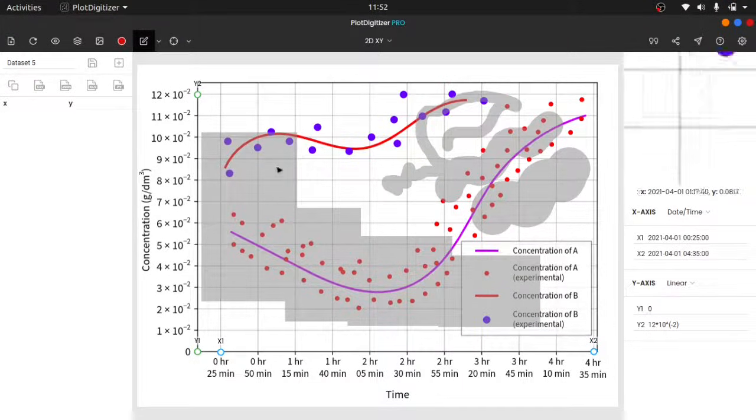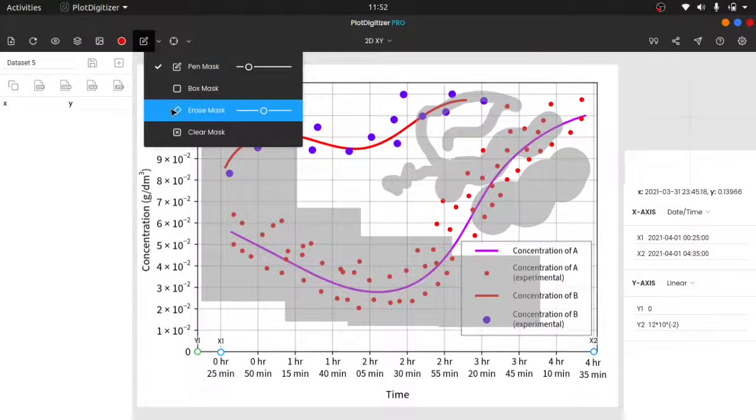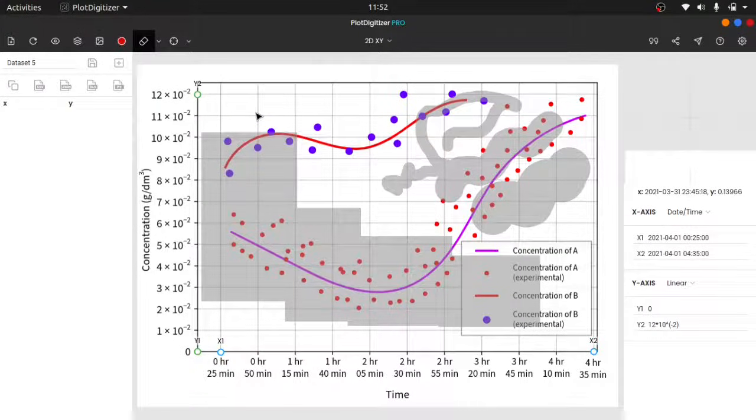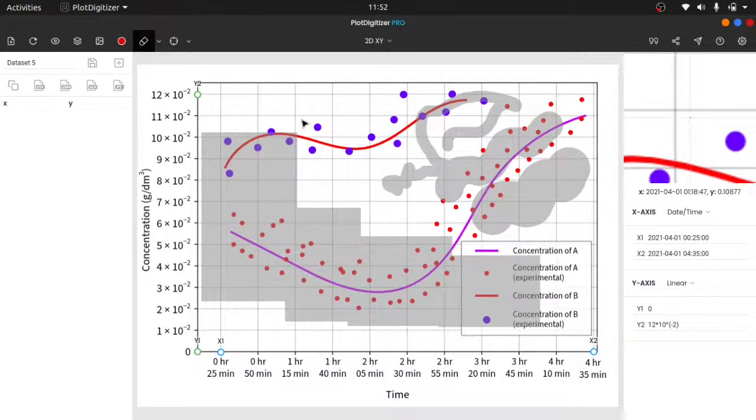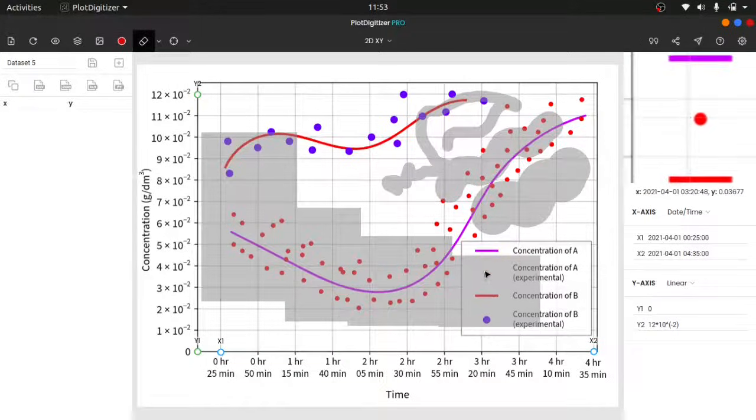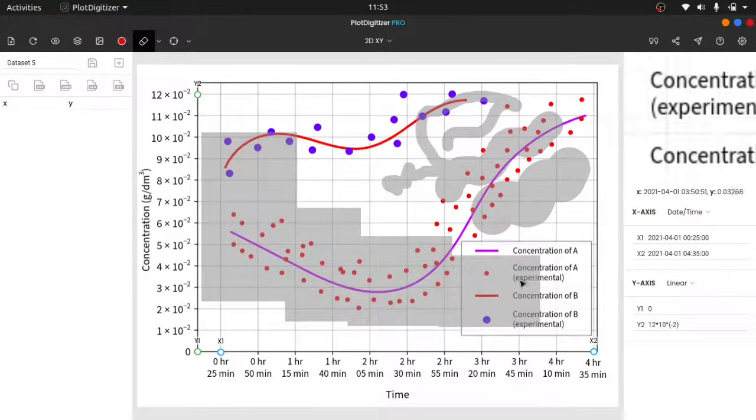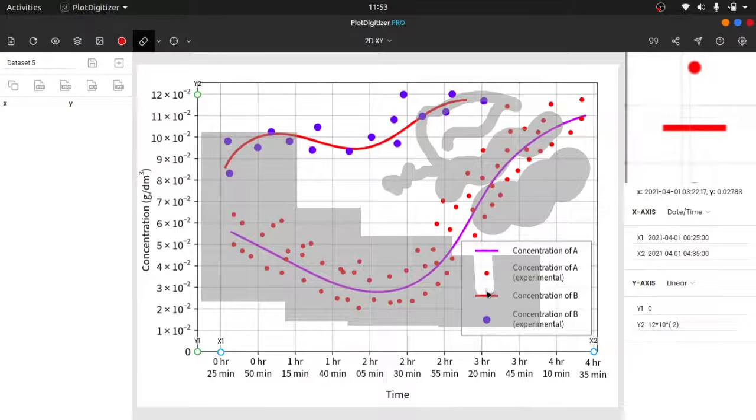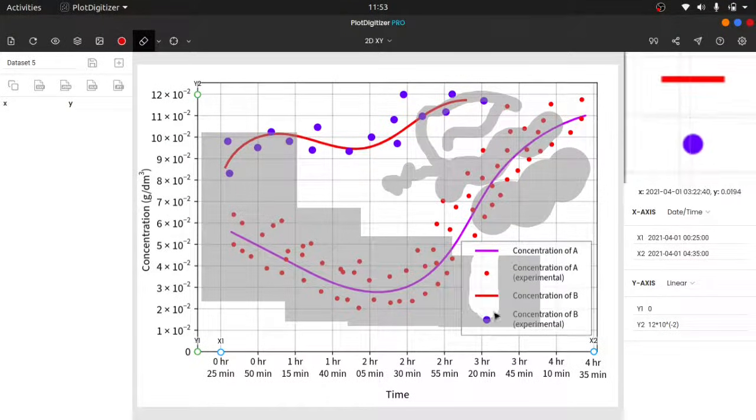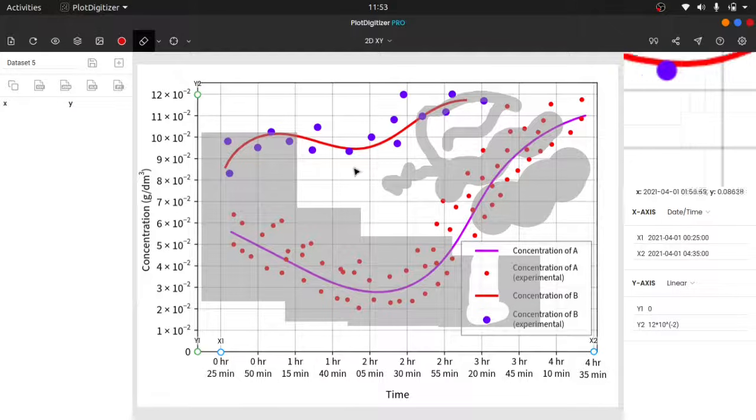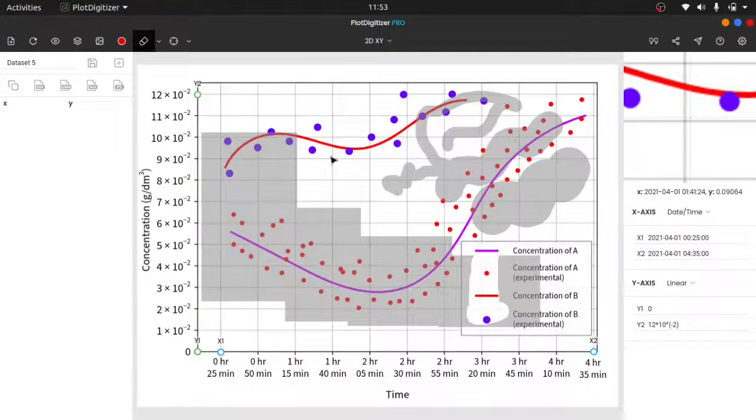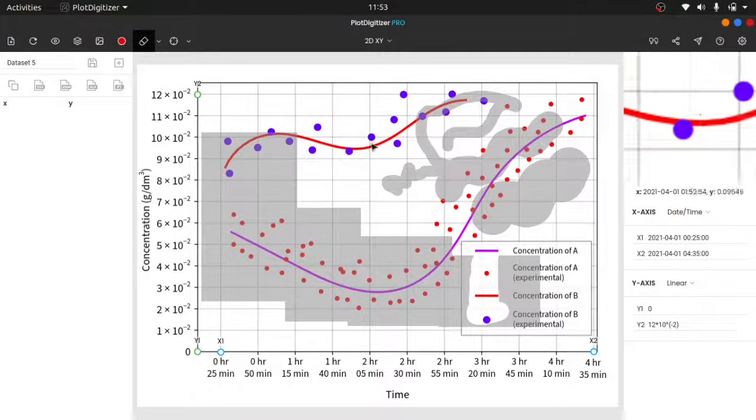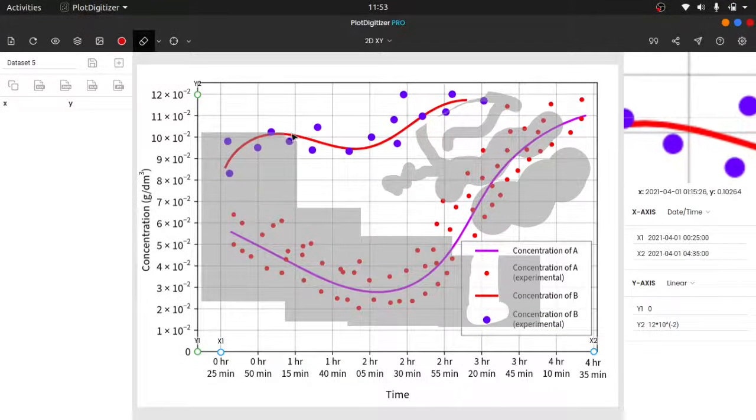The third option is the eraser mask. You can also change the size of the eraser with this slider. The erase mask is applied when you want to remove or eliminate the unwanted portion from the masked region. The unwanted portions can be noises like this legend, or any interfering objects having the same color. In our graph, this red curve is interfering with the red colored points, so let's erase this curve from the masked portion.